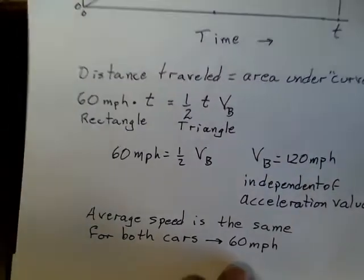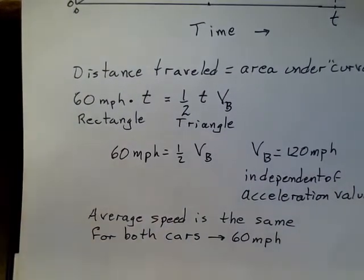And another clue, the average speed for both cars is the same. Distance is equal to average speed multiplied by the time of travel. Car A, its average speed is a constant, equal to the constant speed, 60 miles per hour. For car B, it starts at 0, it ends at 120. It's on a straight line on this graph of velocity versus time. Its average speed is 60 miles per hour.